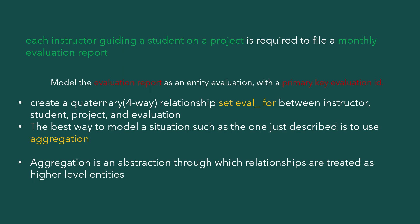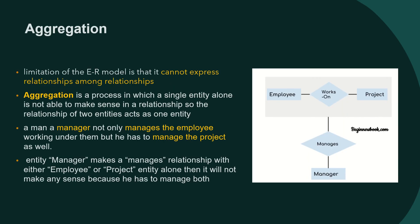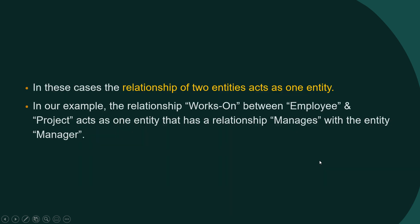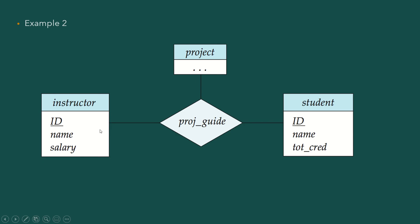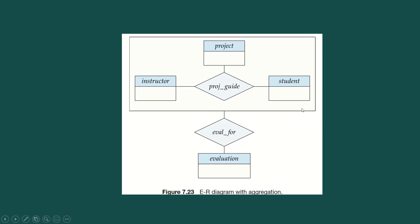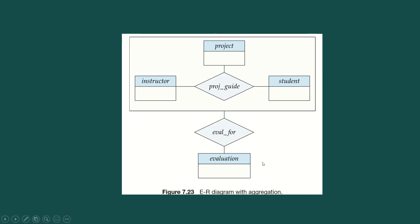That is the concept of aggregation. I took two different examples: the first one is between employee, project, and manager, and the second is between instructor, project, student, and then the evaluation entity set also. The concept of aggregation means we group a particular relationship that exists between different entity sets as a single entity.